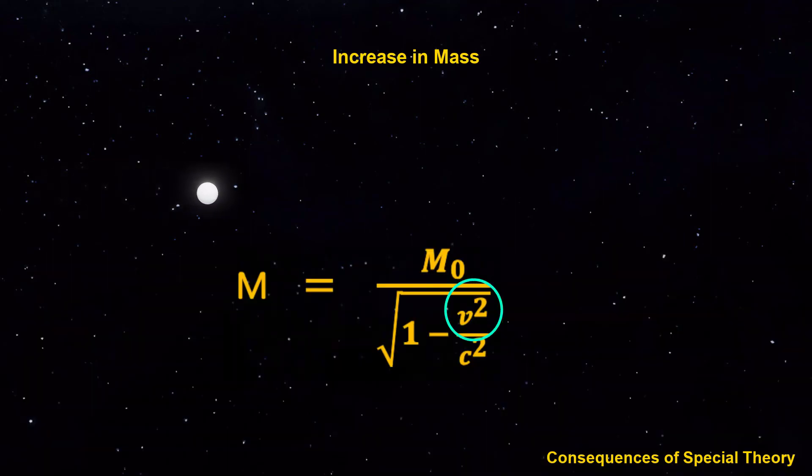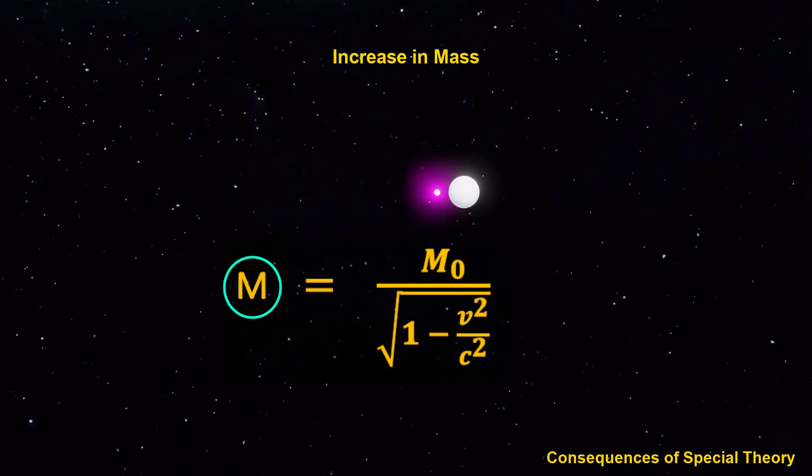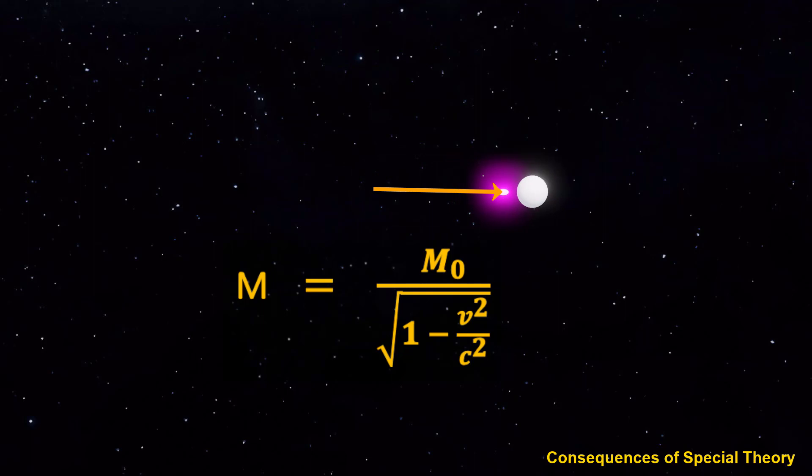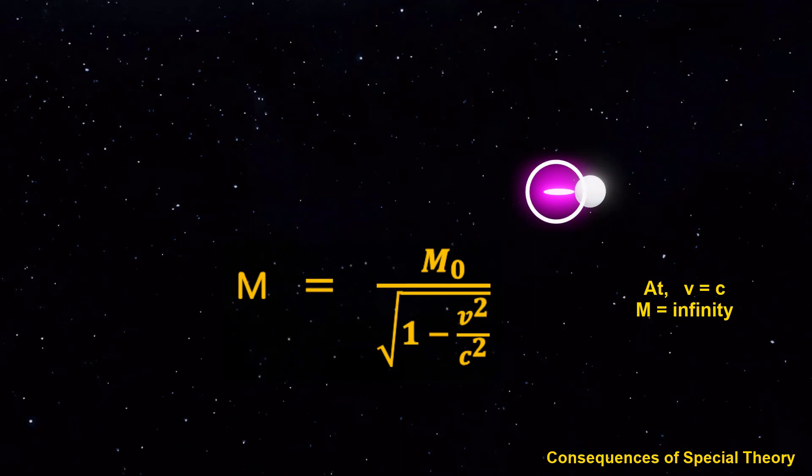As an object's velocity approaches the speed of light, its relativistic mass increases. It becomes increasingly difficult to accelerate an object as it gets closer to the speed of light, requiring more and more energy.